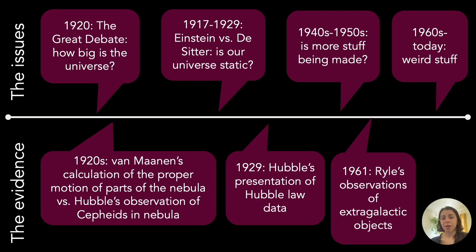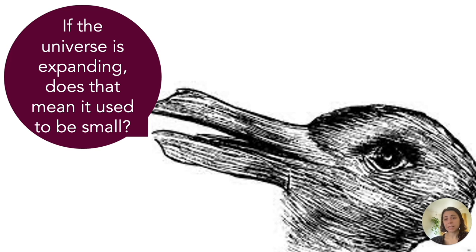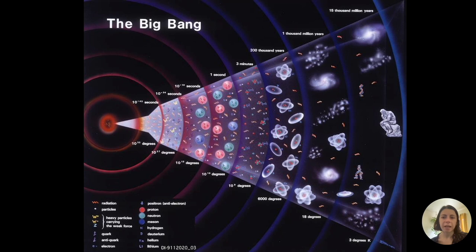Our final episode is whether new stuff is being made in the universe — the debate between Big Bang theorists and steady state theorists. Given that the universe is expanding, you might wonder: didn't it used to be really small? Alexander Friedman proposed this in the 1920s, but nobody took it seriously until Lemaître argued for it again in the 1930s, and then Gamow argued for what is called the Big Bang theory — which says the universe started from a really small volume and has expanded since.